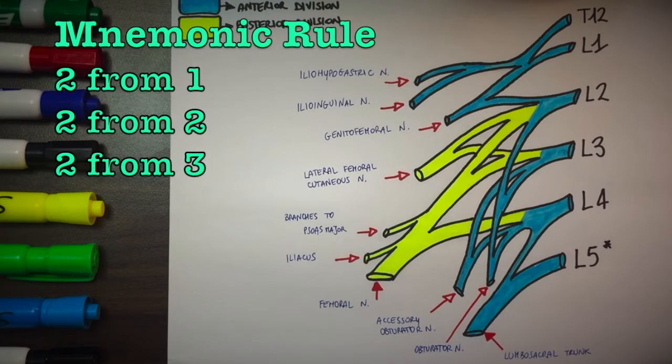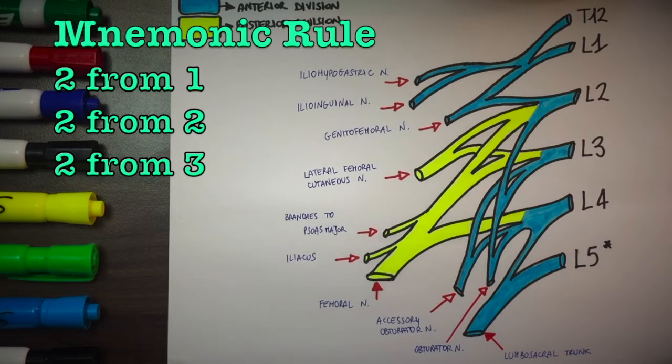There are a few tricks you can use to remember these nerves. One is the mnemonic rule which you can verify for yourself. Two from one, two from two, two from three.